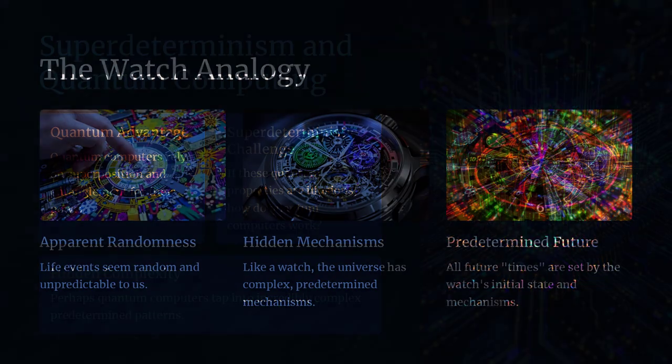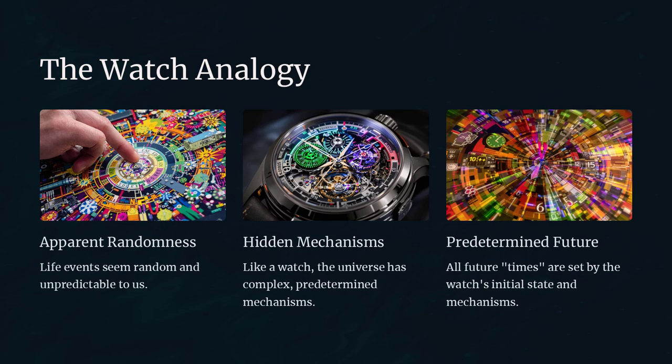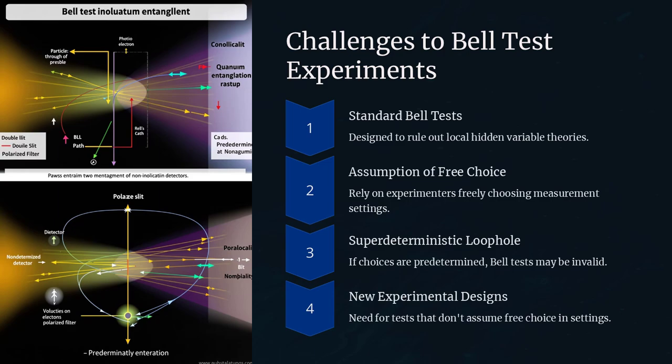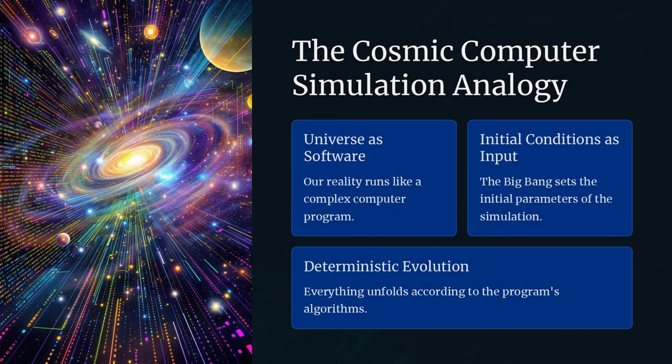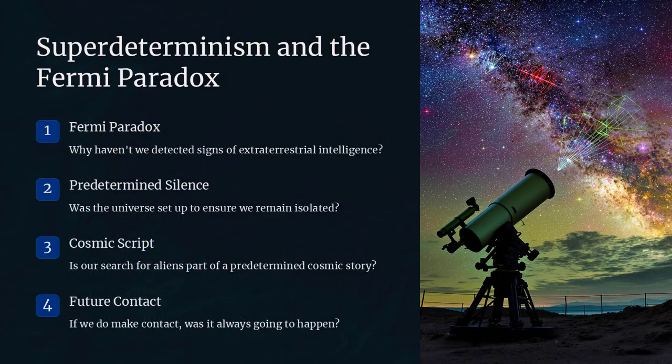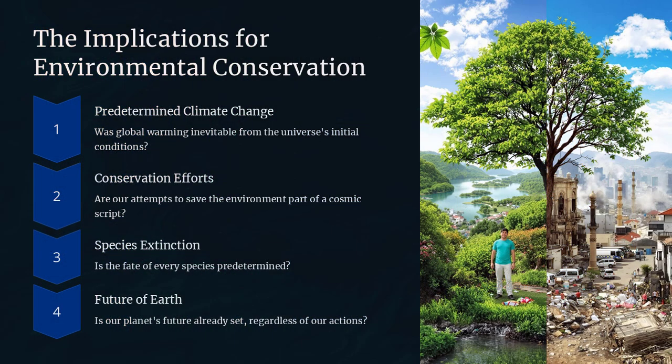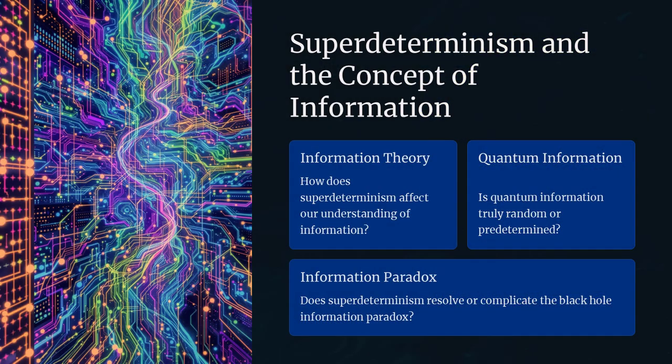Some physicists, including Nobel laureate Gerard T. Hooft, have explored super-determinism as a possible explanation for quantum mechanics without requiring non-locality. But most scientists remain skeptical. It also raises deep philosophical questions. If we are part of a deterministic system with no free choice, does anything we do actually matter? Or could this simply be a convenient excuse to avoid confronting the weirdness of quantum mechanics?